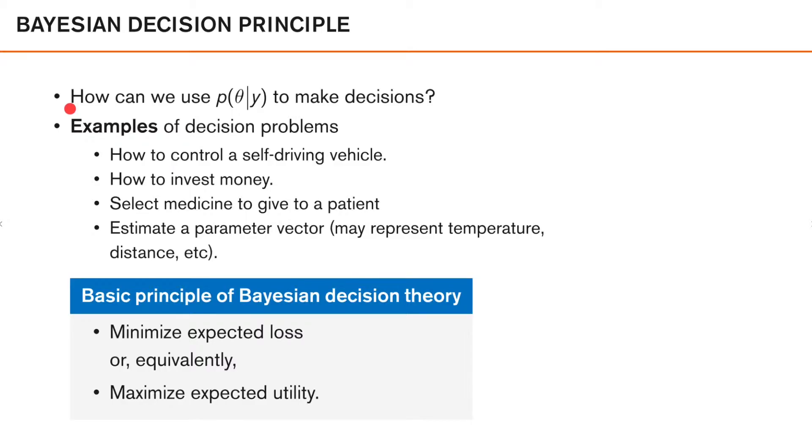So let's discuss the Bayesian decision principle. The question here is how can we use p of theta given y to make decisions? Examples of decision problems can be how to control a self-driving vehicle, for example. That is, decide on appropriate acceleration, braking and steering input in order to safely and efficiently navigate the current traffic situation.